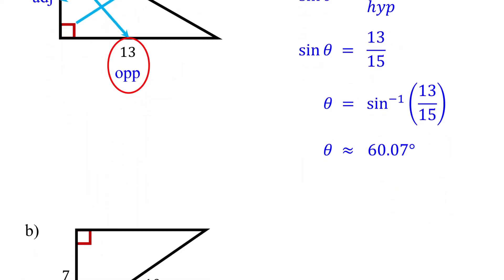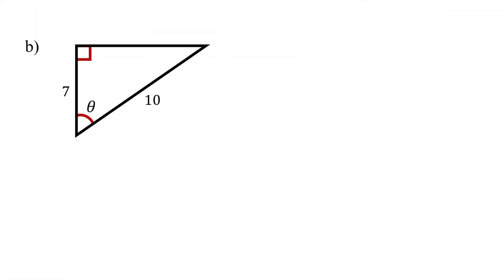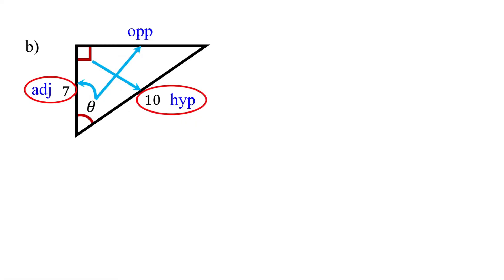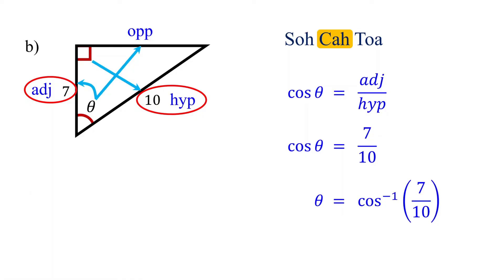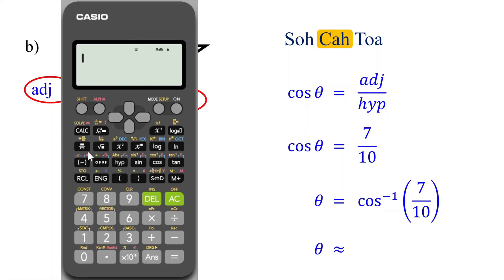Let's move on to the next example. Label the sides: opposite the right angle is the hypotenuse; opposite angle theta is the opposite side; the remaining side is the adjacent side. You are given the adjacent side and the hypotenuse. According to SOHCAHTOA, it is the cosine function that relates these two sides. So cosine of theta equals 7 over 10, which is equivalent to theta equals the inverse cosine of 7/10. The inverse cosine of 7/10 is approximately equal to 45.57 degrees.